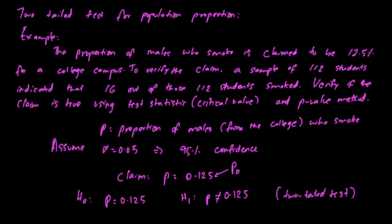The next step is to find the test statistic. The test statistic here is z, which is given by p-hat minus p-not over square root of p-hat times 1 minus p-hat over n. We know p-not is 0.125, which is the claimed value. P-hat is nothing but x over n.